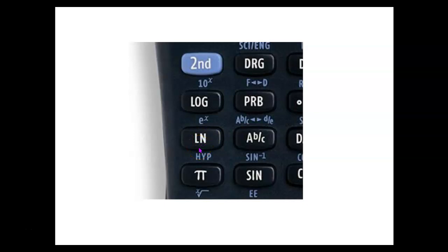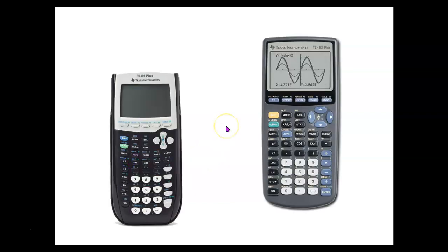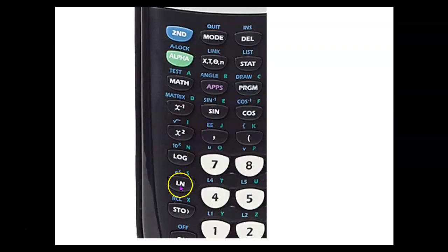You would push the second button and then the button that has e to the x right above it to use that function. On a graphing calculator like a TI-83 or TI-84, it's also above the LN button. If you find the LN button, right above it it says e to the x. So if you press second and then that button with e to the x above it, that's how you would get that.